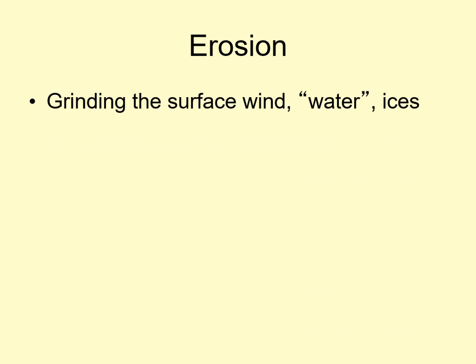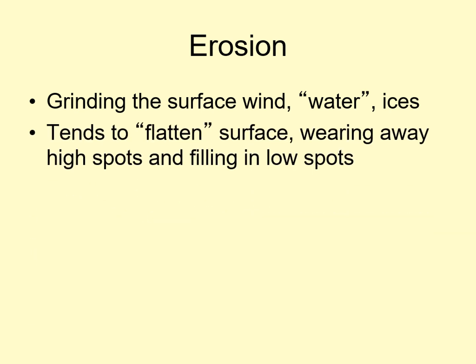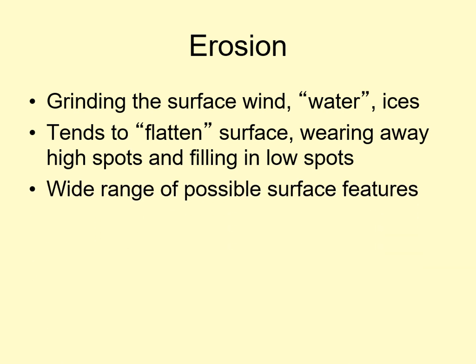The final surface process is erosion. Erosion is the wearing away of a surface due to wind, water or other liquids, or ices. In general, erosion tends to flatten the surface — it wears material away from high points and fills in the low spots. Erosion creates a wide range of different surface features, including river and glacial valleys, wind and wave-cut rock structures, sand dunes, flood plains, and deltas, to name just a few.